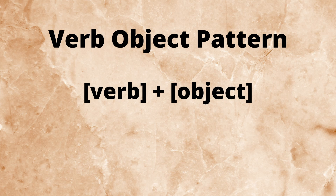We can specify what he drank, but first we have to learn how to use this pattern with a verb-object phrase, which is just a phrase that has a verb on the left and an object on the right.